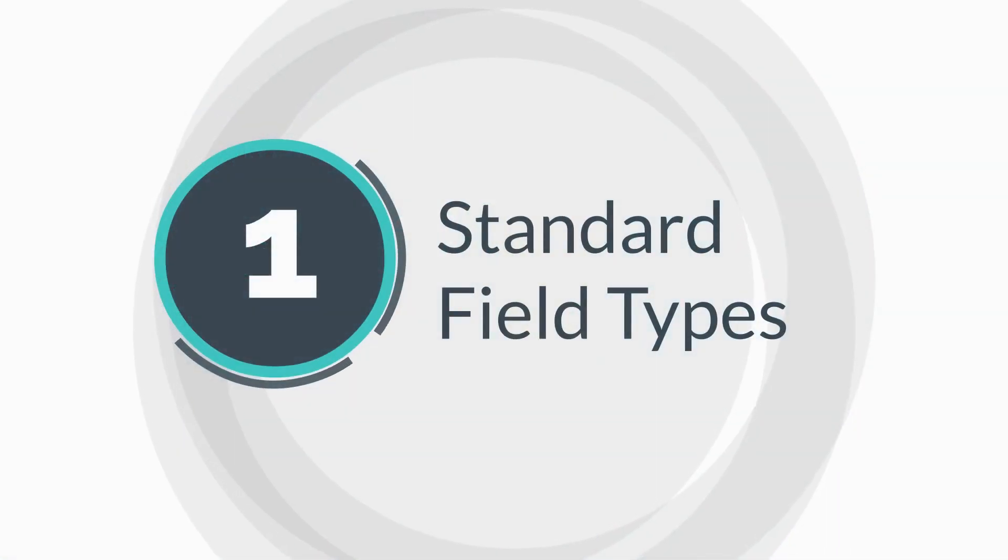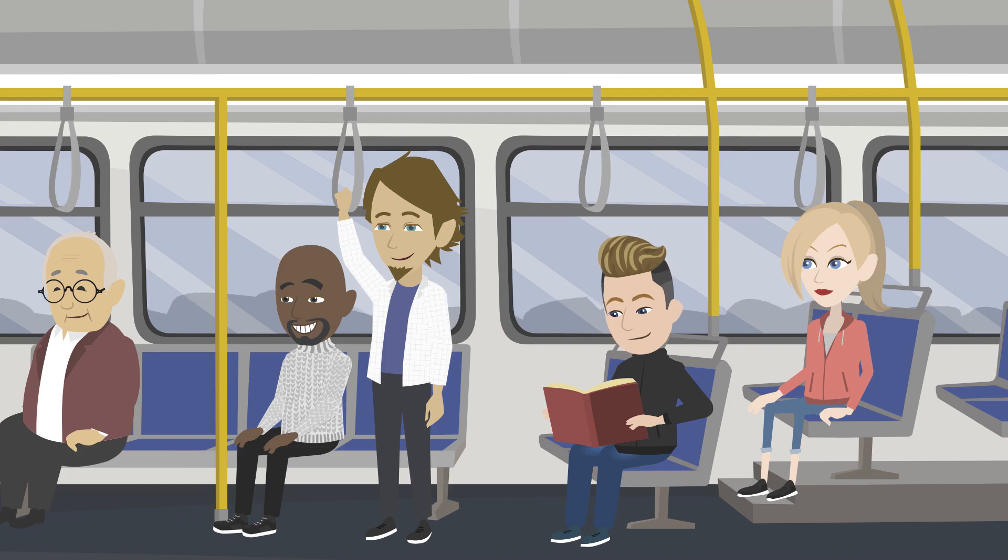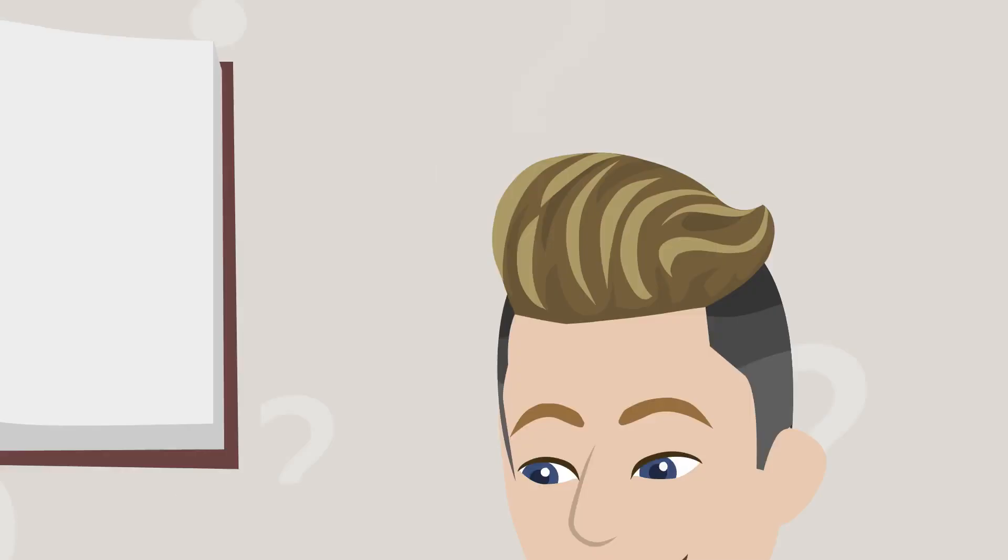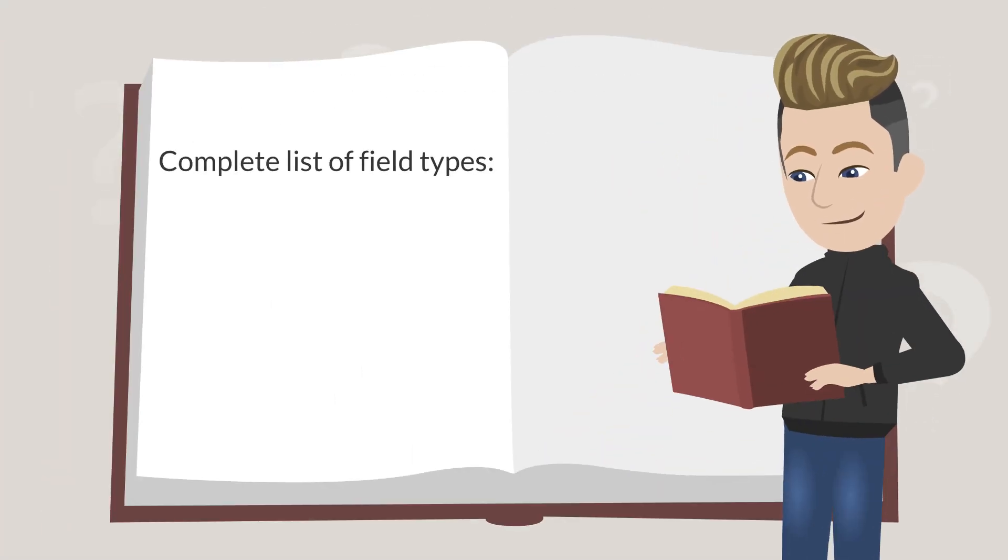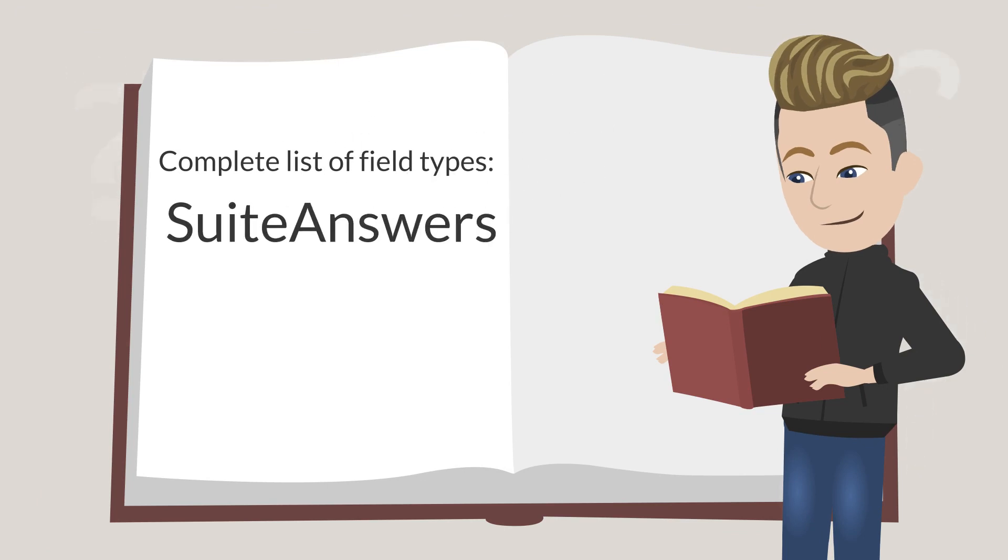Let's start by looking at the standard field types. There are over 20 different field types to choose from. To see a complete explanation of these, you should check out the suite answers page on custom fields. You can access the link below.